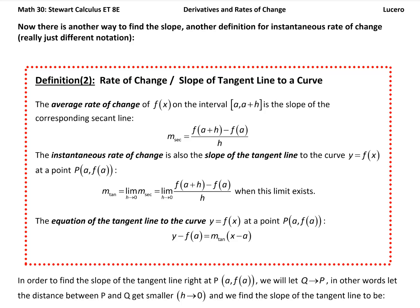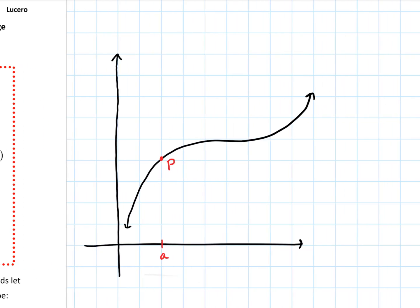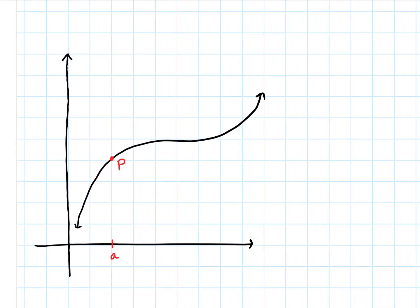We used the notation a, f of a, and then we looked at another point and called it x, f of x, and let x approach a. Now we're going to do a slight change on our notation.